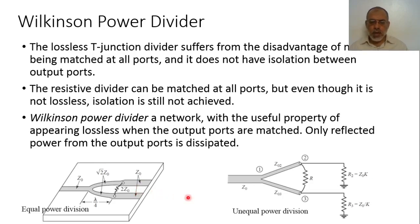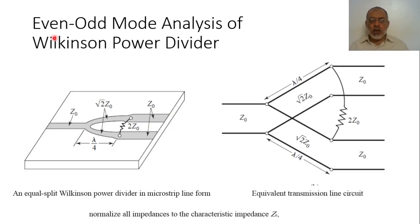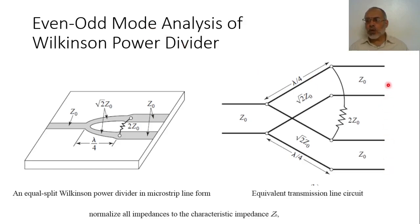The question now is how we obtain these designs, or what is the analysis of the Wilkinson power divider? To study the analysis, it is required to divide the solution into two modes of operation. One mode is called even mode of operation or even mode analysis, and the other mode is odd mode analysis. We start from the two output ports with two voltage sources of the same magnitude and the same phase, the input port is terminated, and we see how to make the two output ports matched and how much power is transferred.